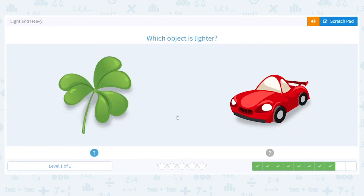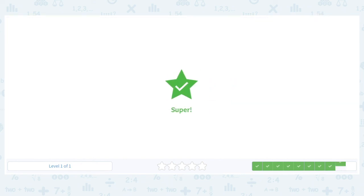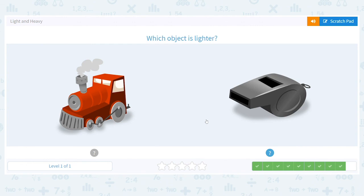This time we still want to know which object is lighter. We have our clover again, and this time we have a car. Use what you know. The clover is lighter.